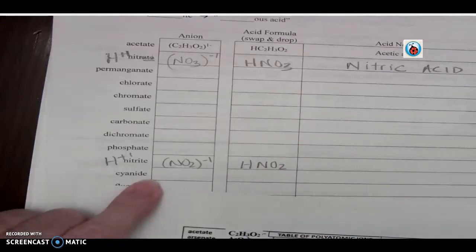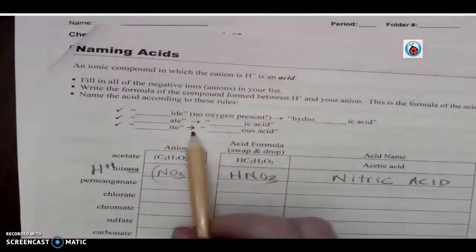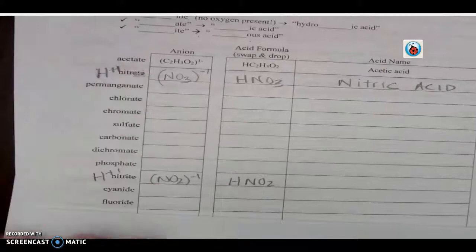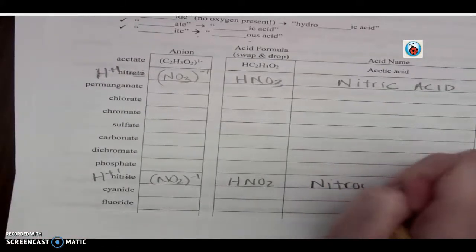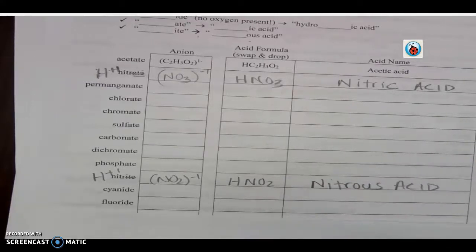But this time when I name it, it ends in -ite. So I drop off the -ite and add -ous. So what's the name of this acid? Nitrous acid.